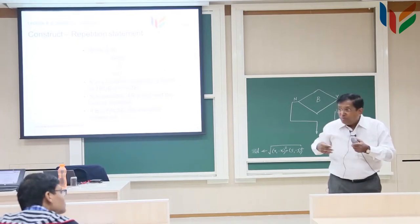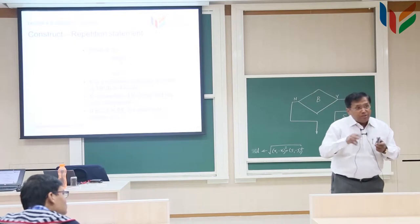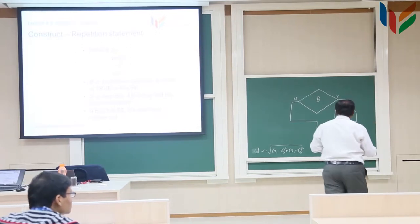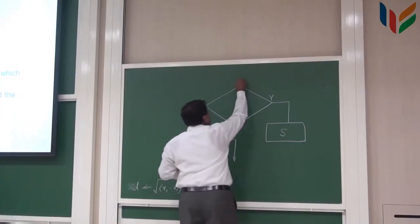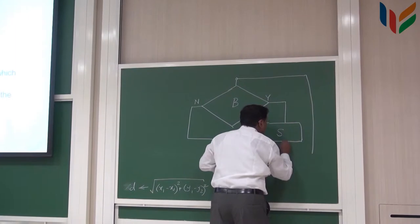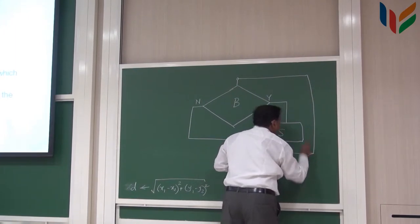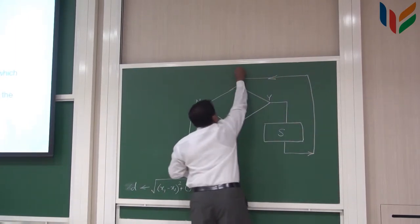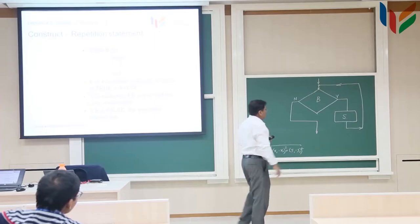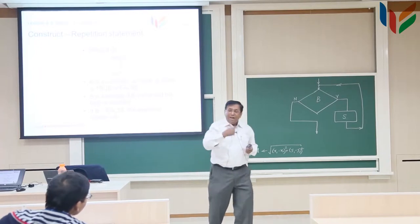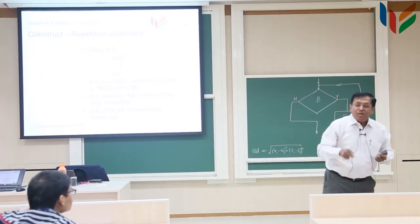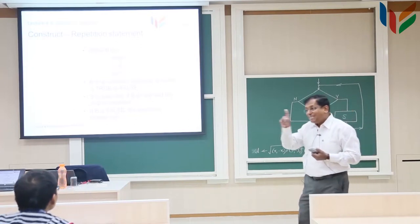S includes a lot of operations and I will also do something on B. Go back again and check this condition. So, again one entry, one exit. The while loop is that while the condition B is true, continue to do the operation S.